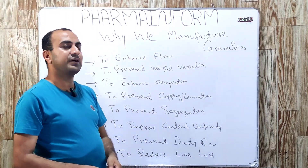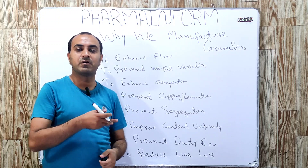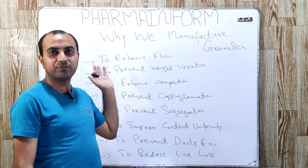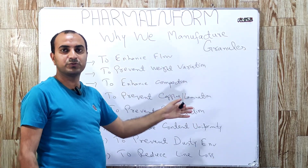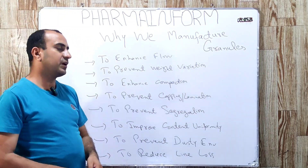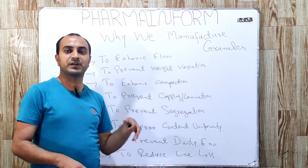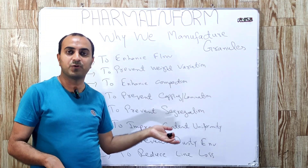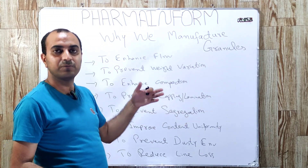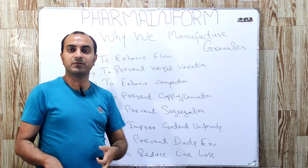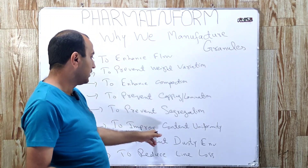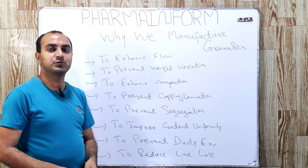The next one is to prevent segregation. The tendency of segregation in fine powders is higher as compared to granules. So, by converting fine powders into granules we can prevent the segregation effect. To improve content uniformity — if segregation is high, content uniformity is affected — so by converting fine powders into granules we overcome segregation and indirectly improve our assay and content uniformity.